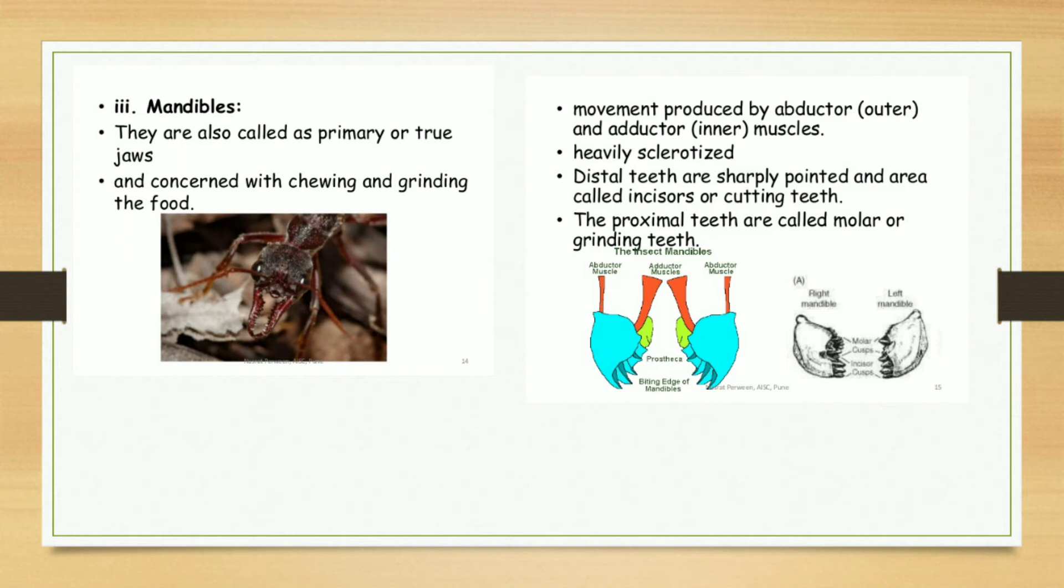The mandible movements are produced by abductor and adductor muscles—outer and inner muscles. The outer muscles are called abductor and inner muscles called adductor. These mandibles are heavily sclerotized. Distal teeth are sharply pointed and are called incisors or cutting teeth. The proximal teeth are called molar or grinding teeth. See in the picture—this is a picture of mandibles. It looks like a sharp blade.